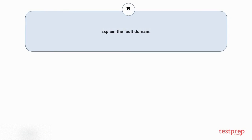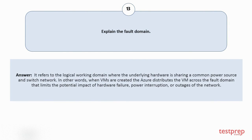Question number 13: Explain the fault domain. A fault domain refers to the logical working domain where the underlying hardware shares a common power source and switch network. When VMs are created, Azure distributes them across the fault domain, limiting the potential impact of hardware failure, power interruption, or network outages.